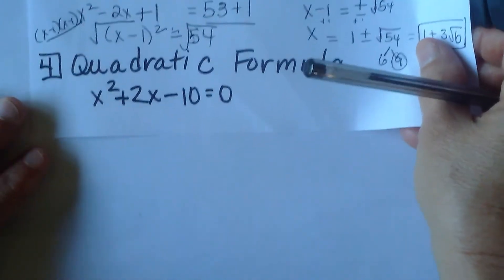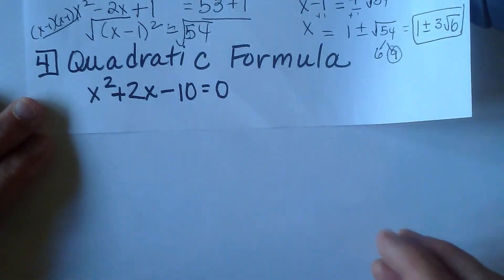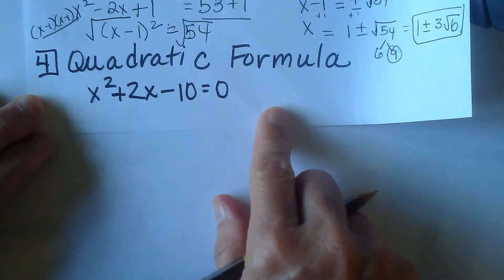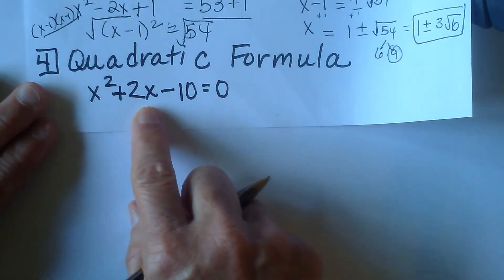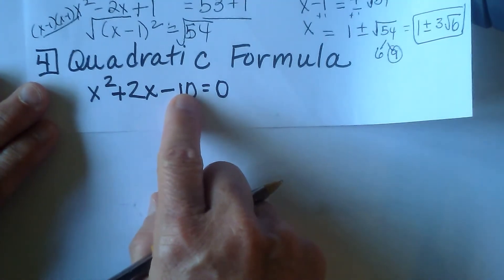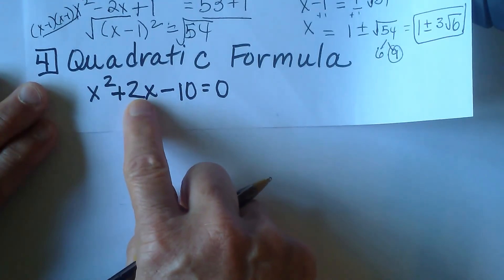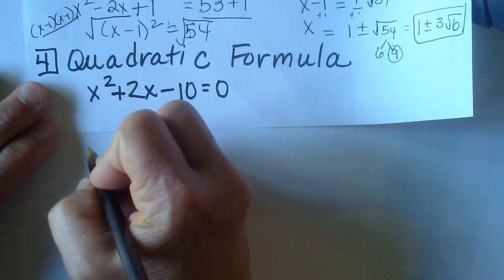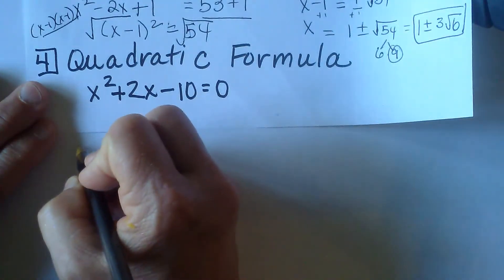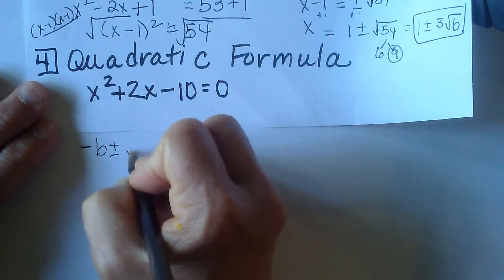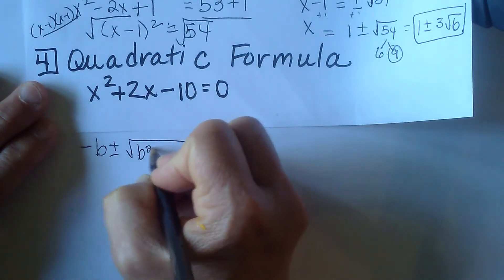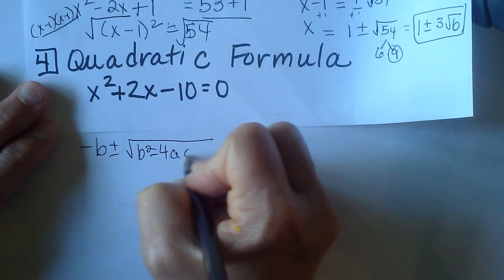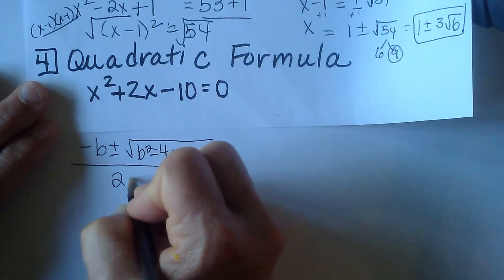Now the last method we're going to look at is the quadratic formula. The quadratic formula works well when you can't factor. So this one, what multiplies to 10 that has a difference of 2? Nothing does. So this is a good time to use the quadratic formula. Let's review the quadratic formula. It's negative b plus or minus the square root of b squared minus 4ac all over 2a.